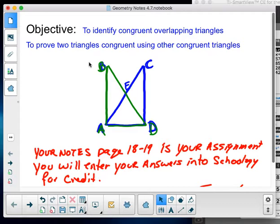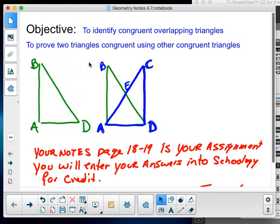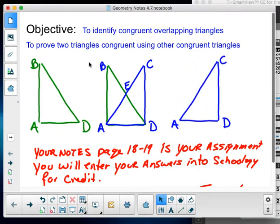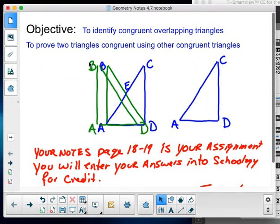I really need you to be able to identify overlapping triangles. In this diagram that I have here, I have this triangle coming through here. Notice the corresponding measures, BDA or ABD, and I have this triangle. Okay, these two triangles are in this same diagram.